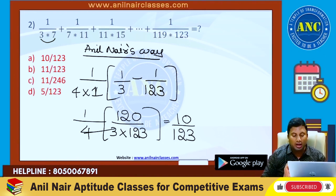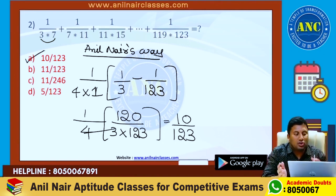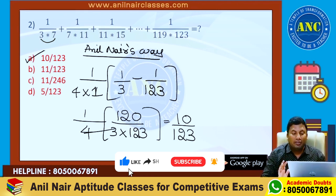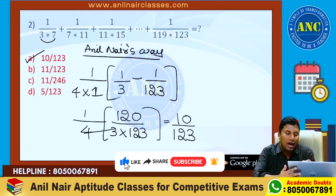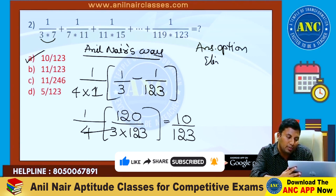Are you all with me? 10/123. So the answer for this question is 10/123. Now, answer option elimination approach — answer option elimination.